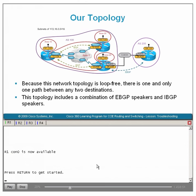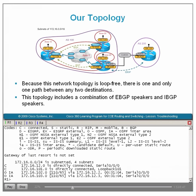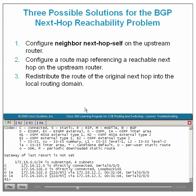There are three possible solutions to the next-hop reachability problem: configure the neighbor next-hop self command on the upstream router; configure a route map referencing a reachable next hop; or redistribute the route of the original next hop into the local routing domain. For this scenario, option one will be selected. Let's configure R2 with the neighbor next-hop self command and associate it with R1.